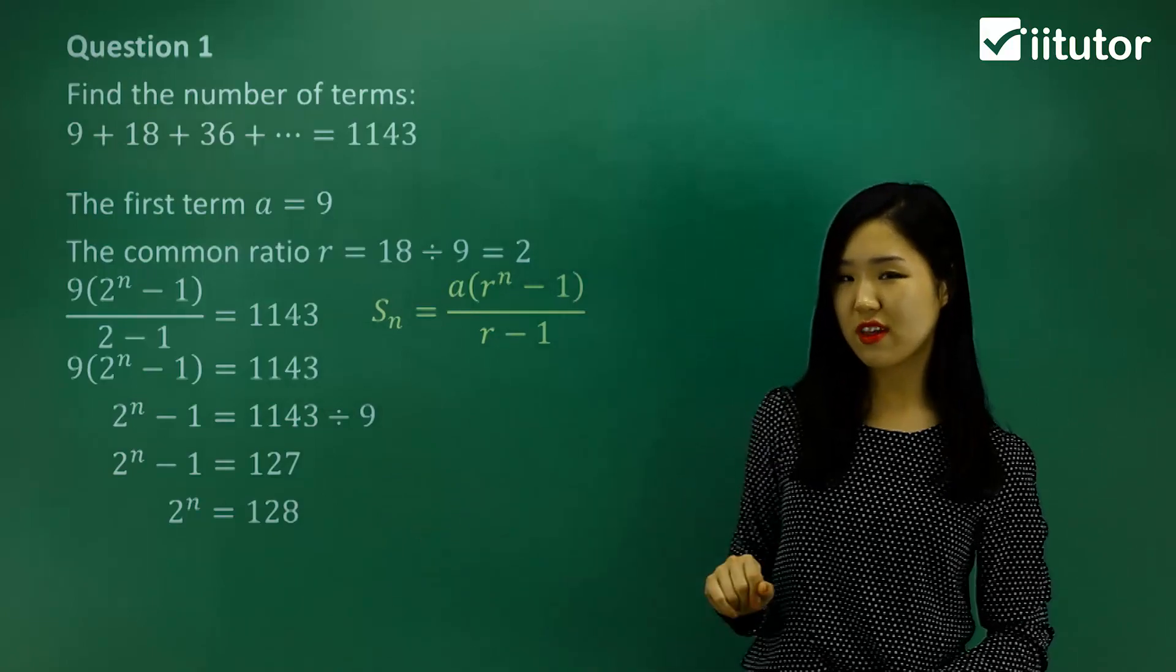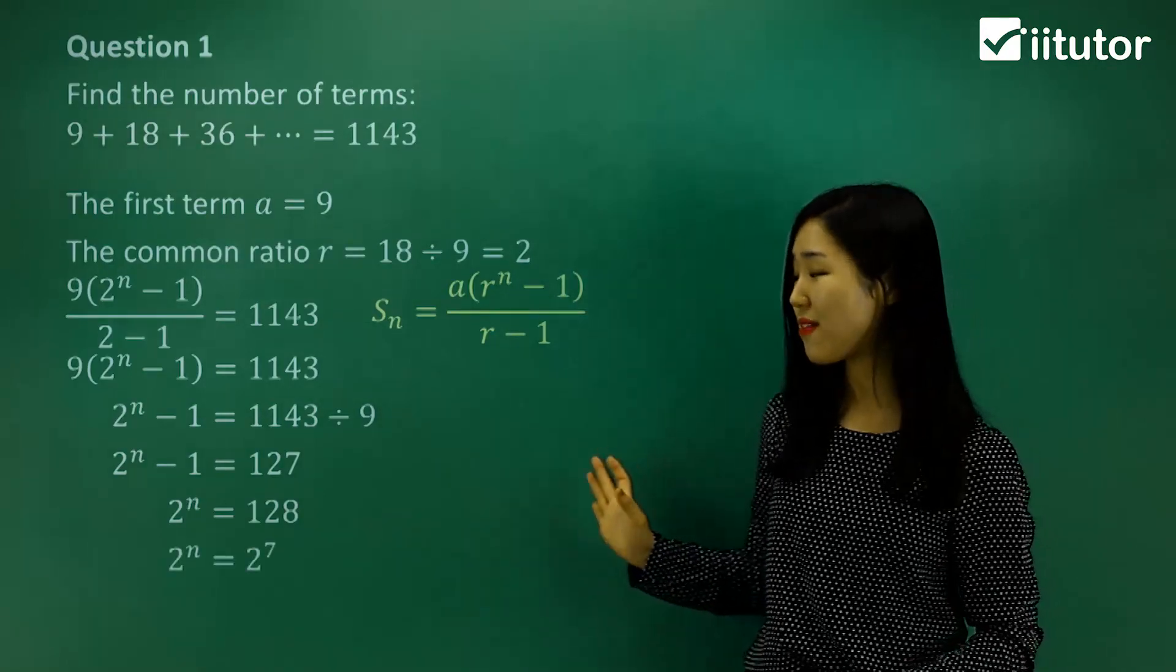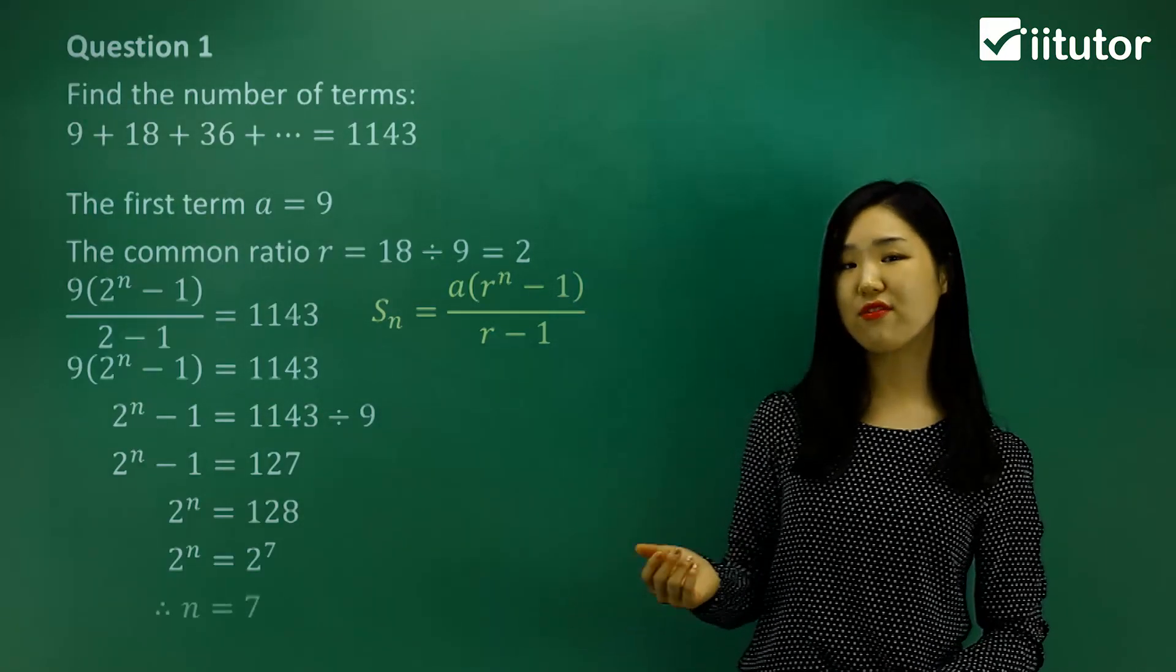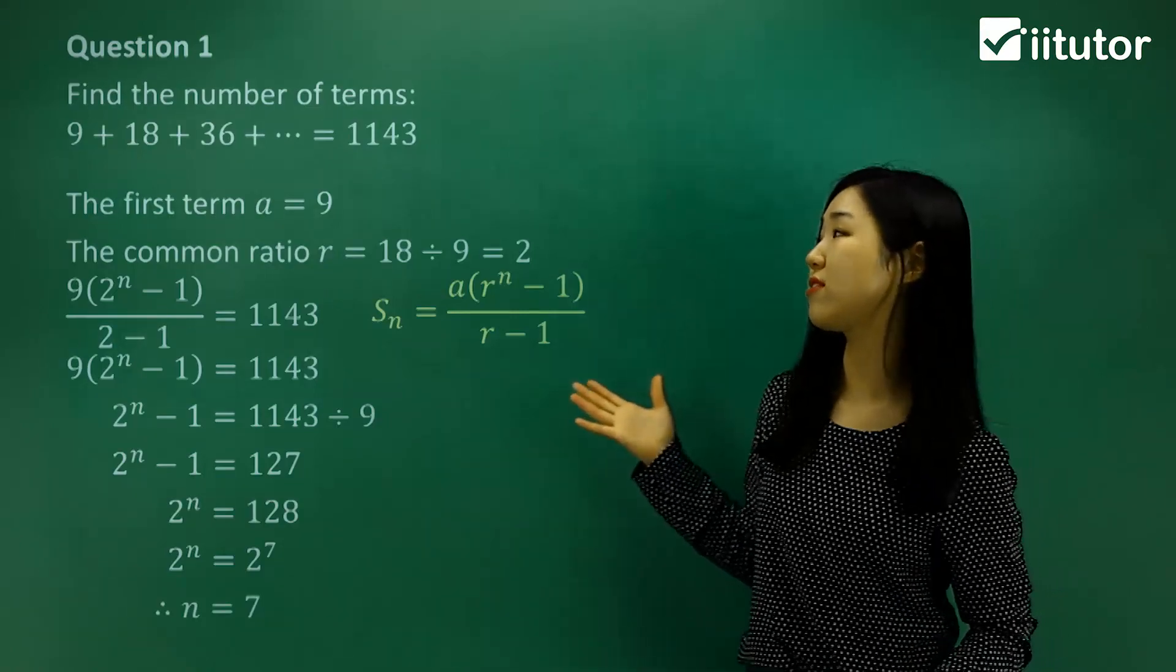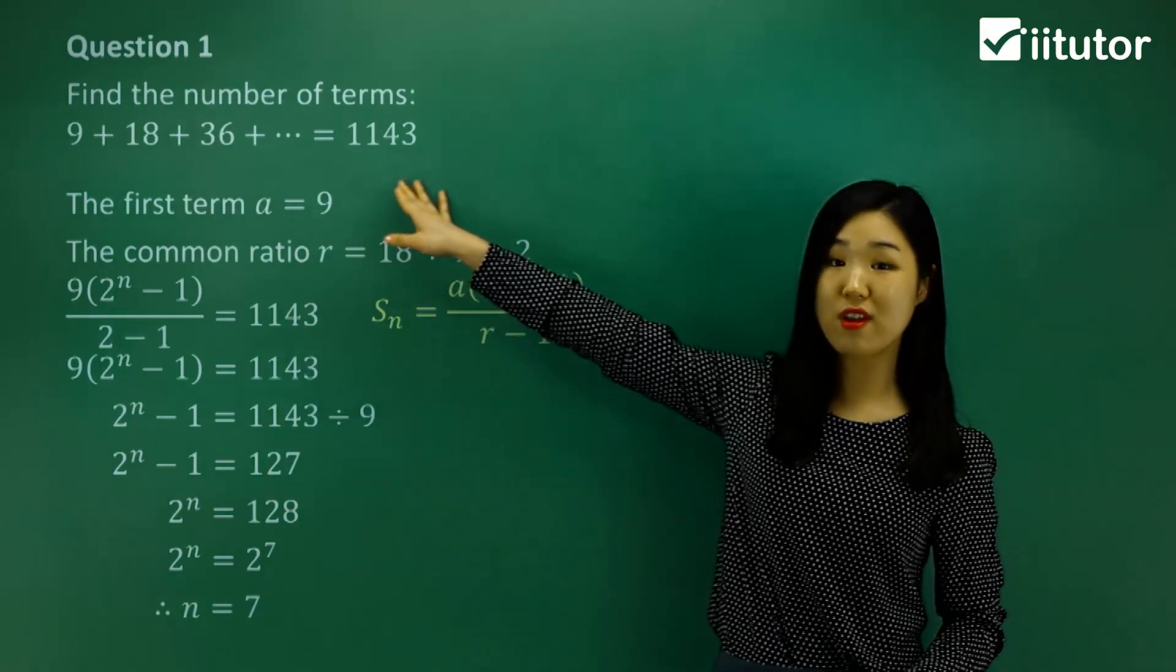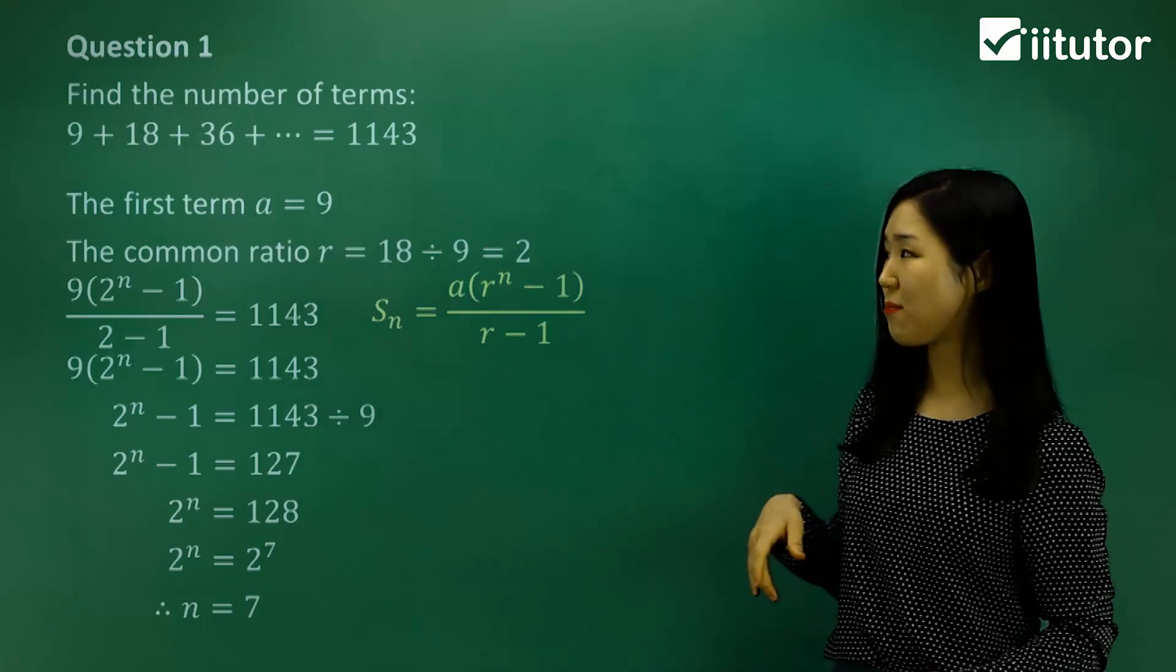And then 2 to the power of what is 128 guys? Now you can do a bit of trial and error. I've realized that 2 to the power of 7 is 128, so therefore n must simply be 7. So we need 7 terms in this geometric series to make the sum 1143. That's what that means.